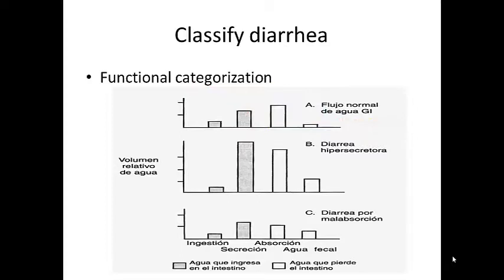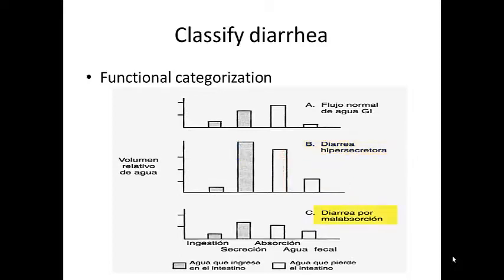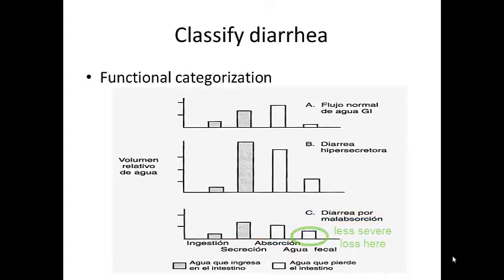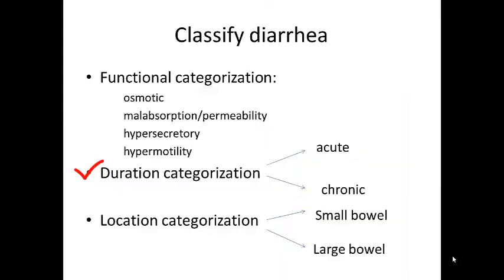That all changes when we have diarrhea. If the diarrhea is hypersecretory, the volume going in is so great that it cannot all be absorbed further down the intestine, and the loss of water can definitely cause potentially lethal dehydration. By contrast, with a small osmotic diarrhea there is no change in the water going into the intestines — what's affected is absorption, with osmotic substances retaining water. This type of diarrhea is usually not as severe in terms of causing dehydration.